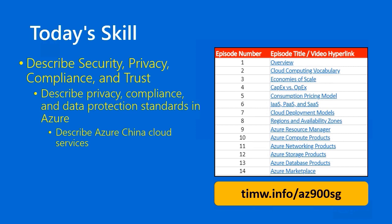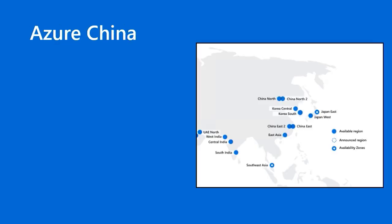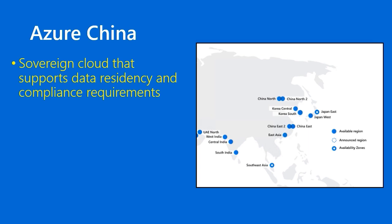If you watched the previous episode where we covered Azure Government, you know that in addition to the Azure Public Cloud, or the Commercial Cloud as it's sometimes called, Microsoft created a separate collection of regions, data centers, and basically a separate version of Azure for Azure Government use. Microsoft has done the same thing for other sovereign states and countries. Specifically, Azure China is a sovereign cloud that supports data residency and compliance requirements for Chinese businesses and the China government itself.